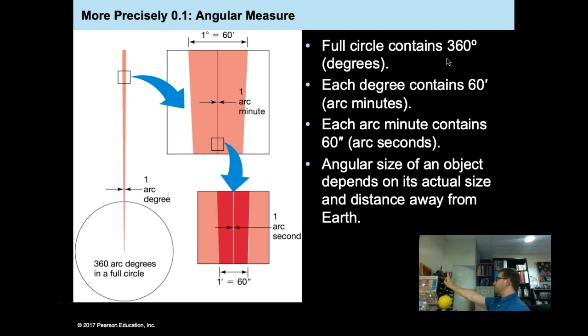Now, one degree of arc is just like the 360 degrees of a circle. Within one degree, there's actually something else: an arc minute.